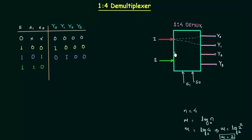1, 0, i is transferred to y2 so we will have 0, 0, i, 0 and when both s0 and s1 are 1, 1, i is transferred to y3 so we will have 0, 0, 0, i. So this is the table for 1 is to 4 dmux.